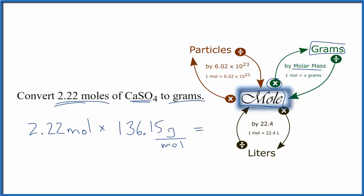So we go from moles to grams, we multiply by the molar mass, and we have moles on top and on the bottom. Those cancel out. We're going to be left with grams, which is what we're looking for.